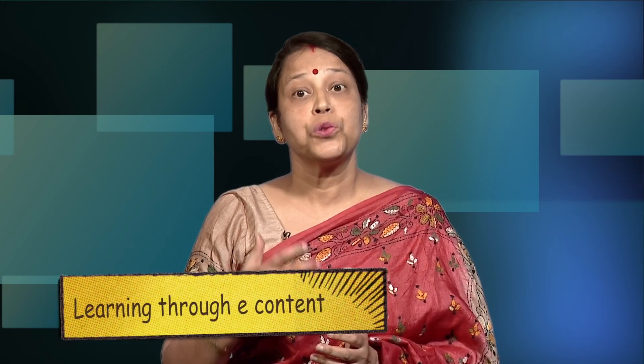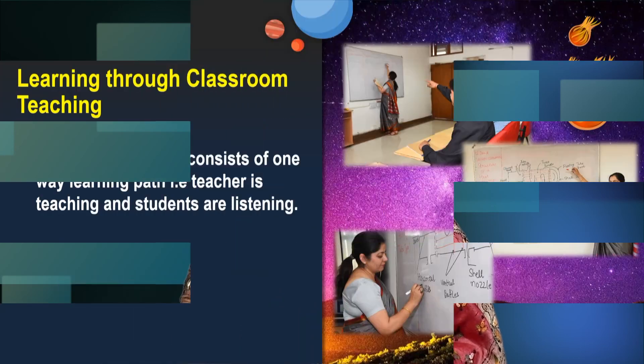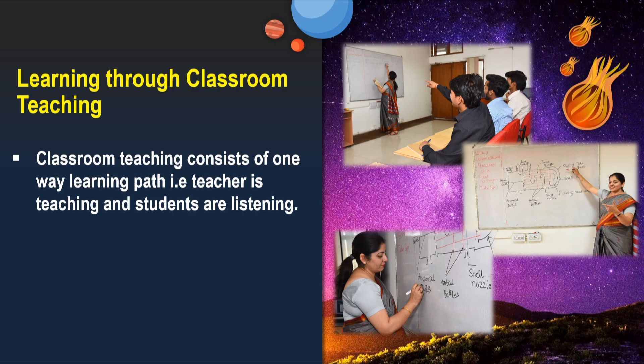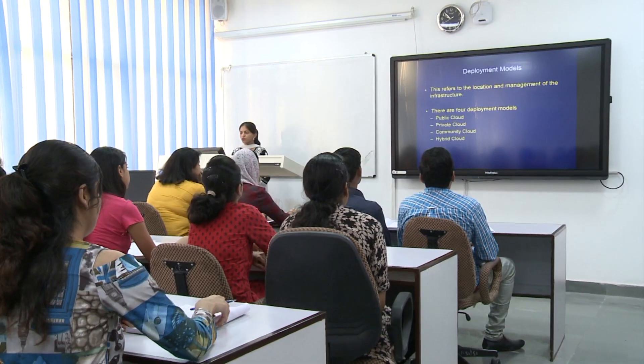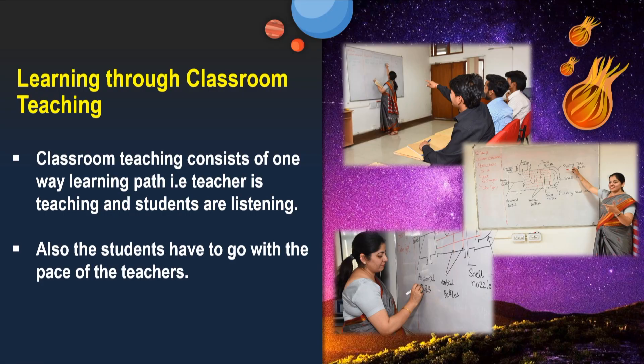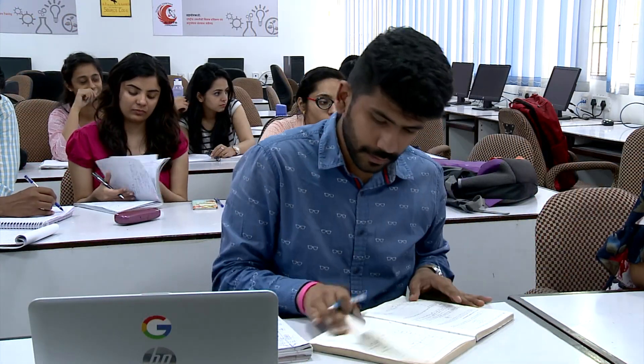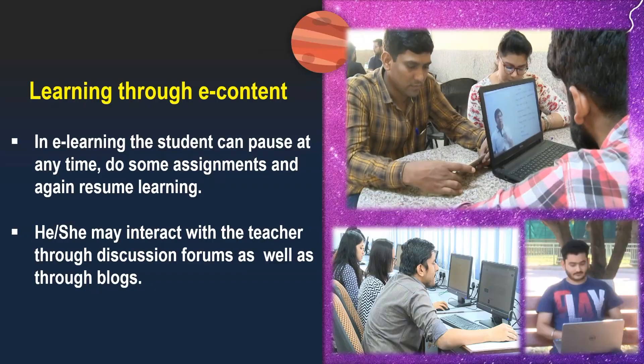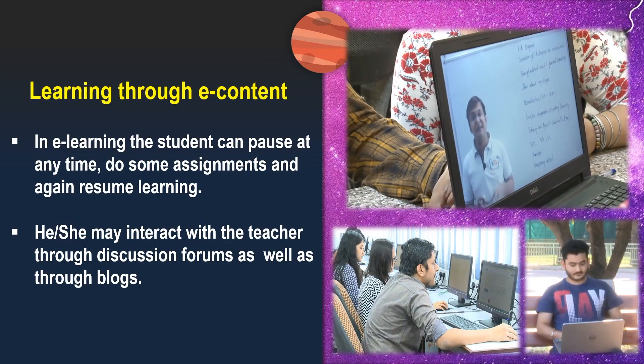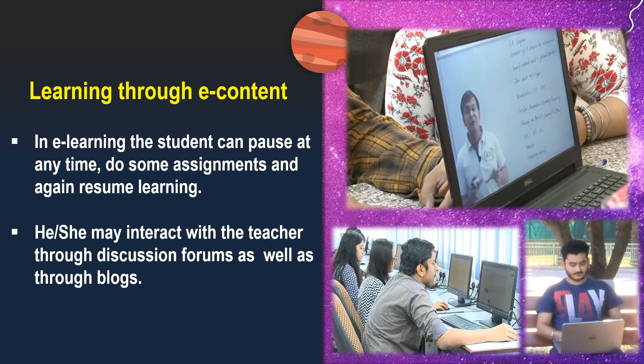Let us see what is the difference between e-learning — that is, learning through e-content — and classroom teaching-learning. Classroom teaching consists of one-way learning: the teacher is teaching and students are listening, and students have to go with the pace of the teacher. But in e-learning, the student can pause at any time, do some assignments, and again resume their learning. The student may also interact with the teacher through discussion forums as well as through blogs.